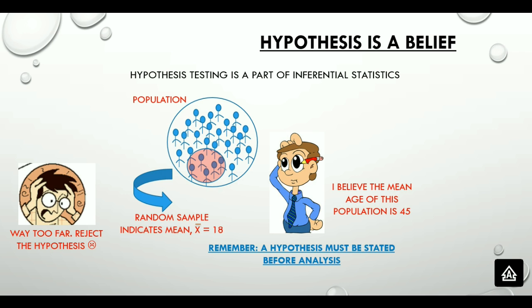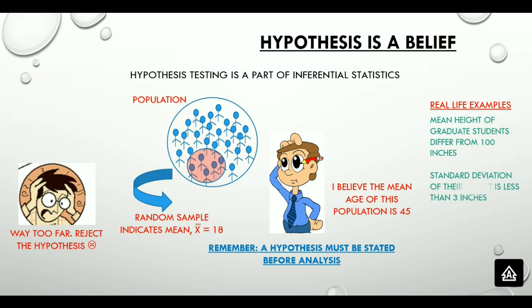Let's look at a few real-life examples of hypothesis. Mean height of graduate students differs from 100 inches. Standard deviation of their height is less than 3 inches. Male and female students differ in weight. All three of these are hypotheses or assumptions about a population parameter.